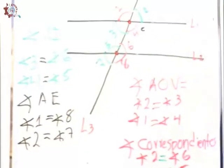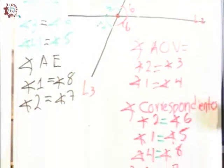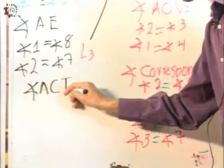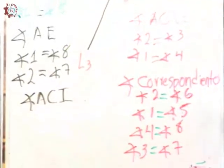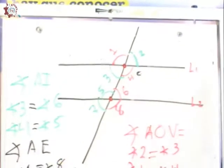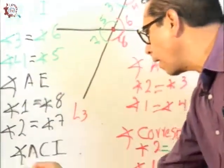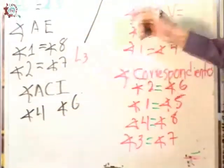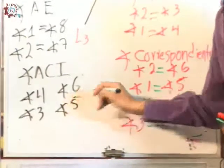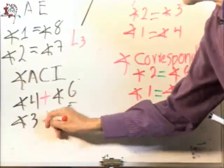Traten de comprender la simbología para poder realizar la actividad. Por último, los ángulos colaterales internos. Estos ángulos colaterales internos tienen una característica muy importante: suman 180 grados, por consiguiente son suplementarios. Se encuentran a los lados de la transversal. Si son internos, sería el ángulo cuatro con el ángulo seis, y el ángulo tres con el ángulo cinco. Sumados dan 180 grados.